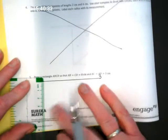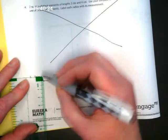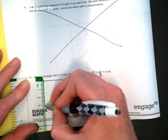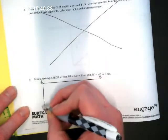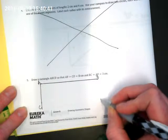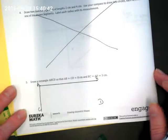And then BC and AD are 3 centimeters. That means we're going to have two side lengths that are 8.